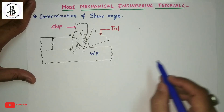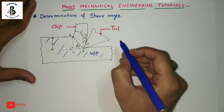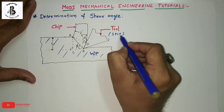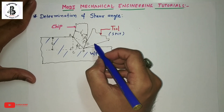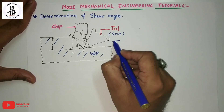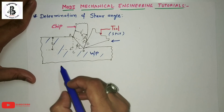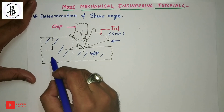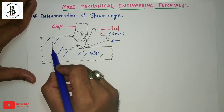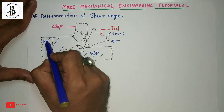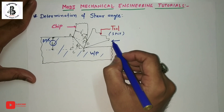Let us look at the basic geometry of metal cutting operations. Our workpiece material is being cut using a single point cutting tool (SPCT). The tool is in contact with the workpiece, and by application of feed towards the left side and according to the given depth of cut, the distance T1 from the upper side of the workpiece to the tool tip represents the depth of cut.